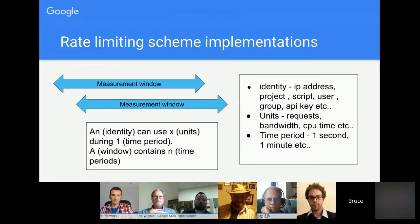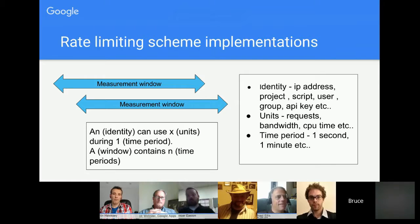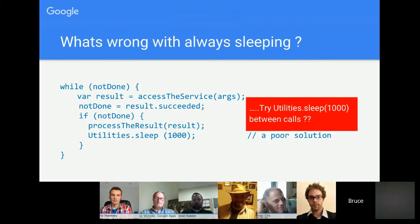A measurement window is the period over which usage of a resource is measured. If something says it allows one thing per second, it doesn't mean it checks every second — more likely it checks usage over a longer period, and if it exceeds the limit, it fails. That's why simply waiting a second between each call is probably not the right approach. Facebook Graph API, for example, has a 15-minute measurement window even though they talk about per-minute limits.